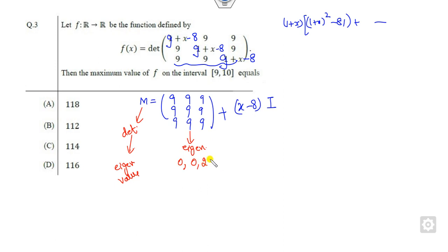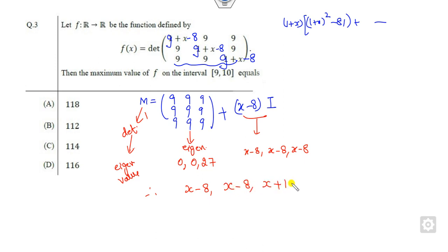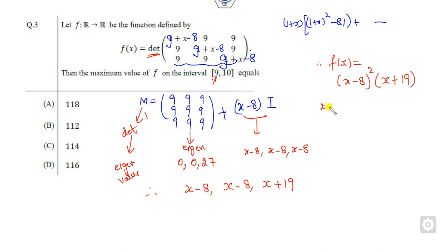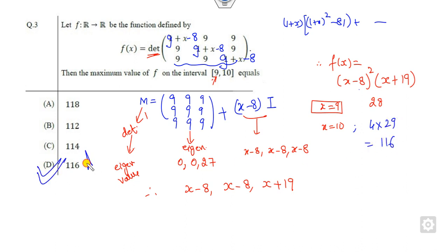The eigenvalues of the all-ones 3×3 matrix are 0, 0, and 3. So the eigenvalues of M = 9J - 8I are x-8, x-8, and x+19. Therefore f(x) = determinant = product of eigenvalues = (x-8)²(x+19). This is a polynomial, a continuous function, and increasing in x. At x = 9: (1)²(28) = 28; at x = 10: (4)(29) = 116. So the answer is in the interval [1, 6].